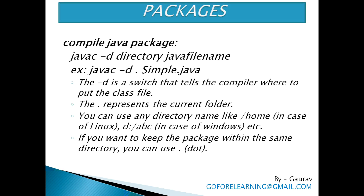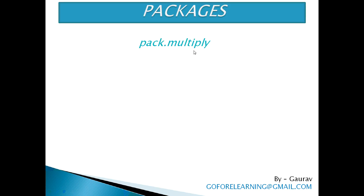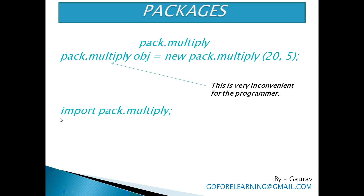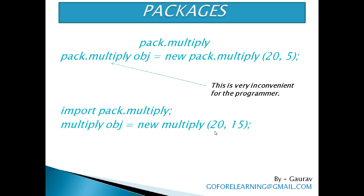Let us assume that our package with the multiply class is ready. The next step is to use the multiply class and multiply method in a program. We can refer to the multiply pack using the membership operator dot, as pack.multiply. To create an object of the multiply class, we write: pack.multiply obj = new pack.multiply(20, 5). Every time we need to write the package name before the class name. This is inconvenient for the programmer. To overcome this, we can use an import statement once at the beginning of the program: import pack.multiply. After that, we can directly write: multiply obj = new multiply(parameters), without repeating the package name.